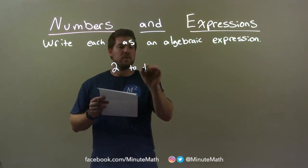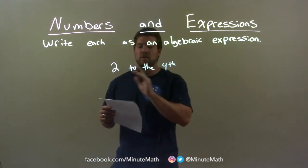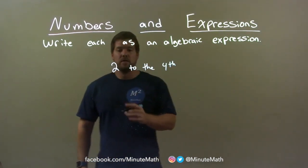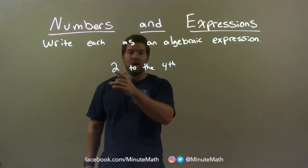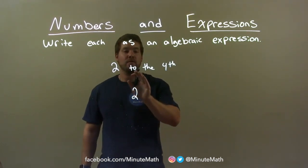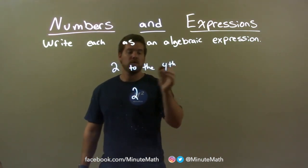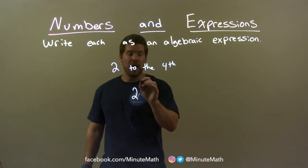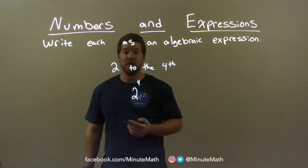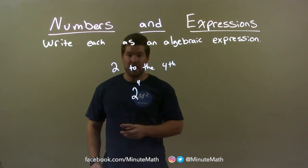2 to the fourth. So what we start here: we start with 2 as our base. And when they say 2 to the fourth, they're referring to the exponent. So the fourth power — the 4 — is in the exponent. There we have it: 2 being the base, 4 is the exponent.